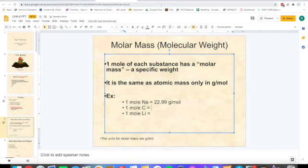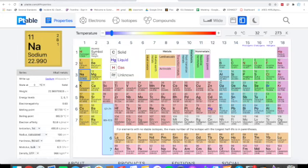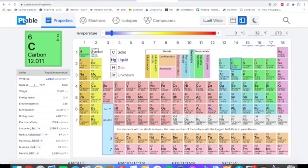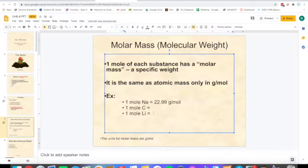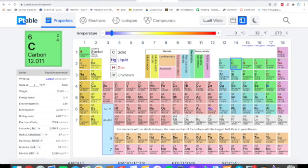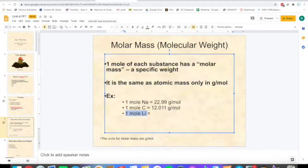One mole of carbon - you'll find carbon over here, the bigger number is the mass which is 12.011, so your molar mass is 12.011 grams per mole. In your notes, I want you to write the molar mass for lithium. You'll look at your periodic table, find lithium, the bigger number is the mass number, and the unit will be grams per mole.